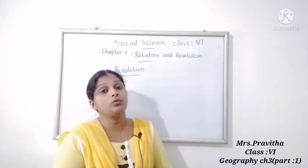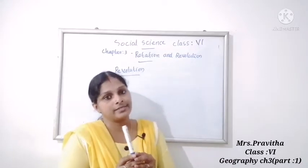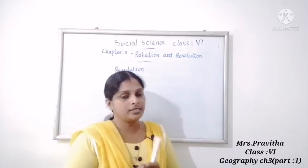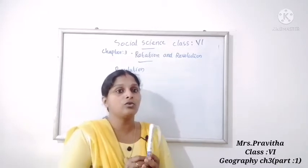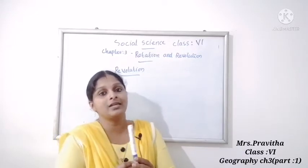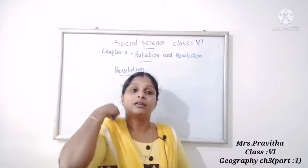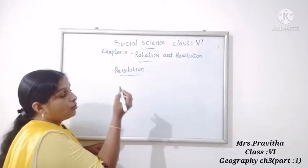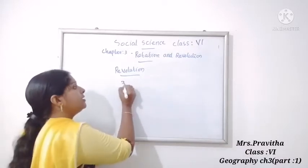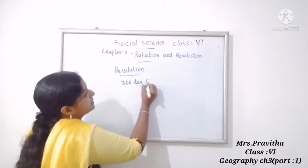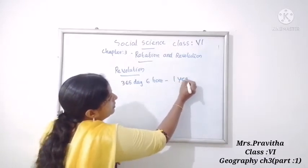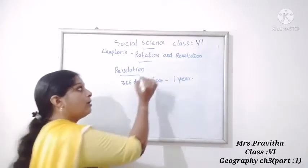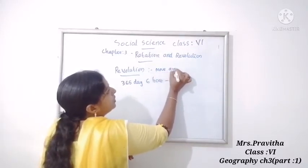While rotating, the earth also moves around the sun — that is known as revolution. Earth moves on its own axis (rotation), and at the same time it moves around the sun in a fixed path — that is called revolution.